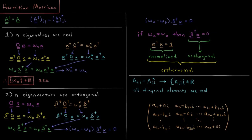This video will discuss some properties of Hermitian matrices and show why they are really useful for expressing operators that correspond to physical observables, or some measurable physical properties of a system. We've defined a Hermitian matrix in previous videos as a matrix where the adjoint is equal to the matrix. The adjoint of a matrix is where you take the transpose and then take the complex conjugate of all of your elements.